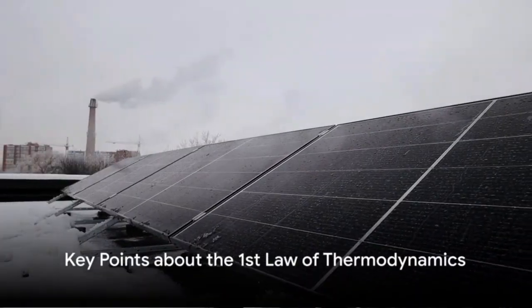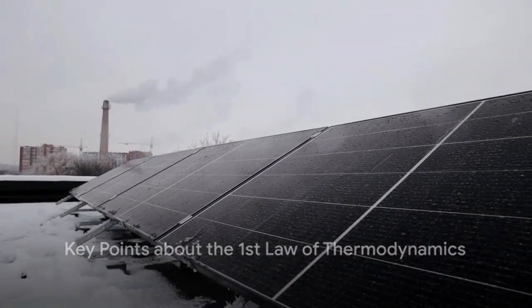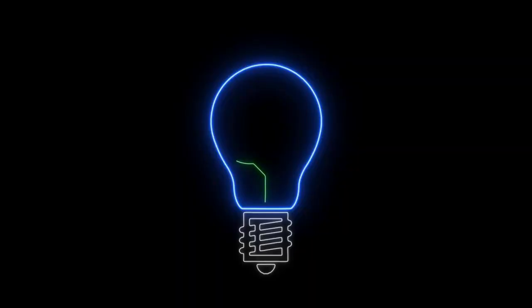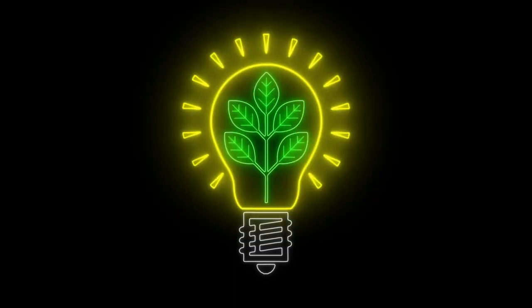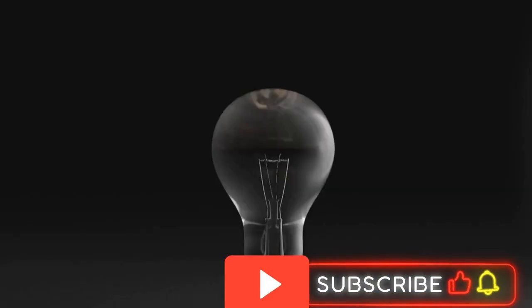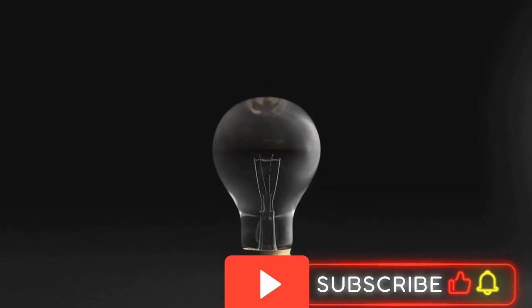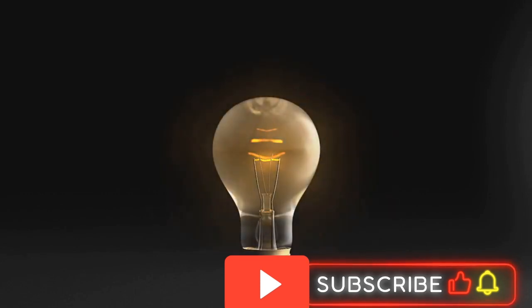Now let's summarize the main points about the first law of thermodynamics. First off, the first law of thermodynamics is all about energy conservation. It's the law that states in no uncertain terms that energy cannot be created or destroyed. It can only be transferred or changed from one form to another. This is a fundamental principle that applies universally, from the smallest atomic particles to the largest celestial bodies. Think about a bouncing ball. When it's at its highest point, it has potential energy.